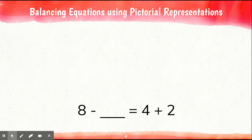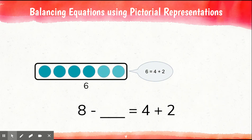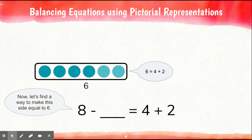Okay, here we have 8 minus what is equal to 4 plus 2. Let's begin by finding the sum of 4 and 2. Here are 4 blue counters and 2 more. That makes a total of 6. So 4 plus 2 is equal to 6. Now let's find a way to make this side equal to 6.